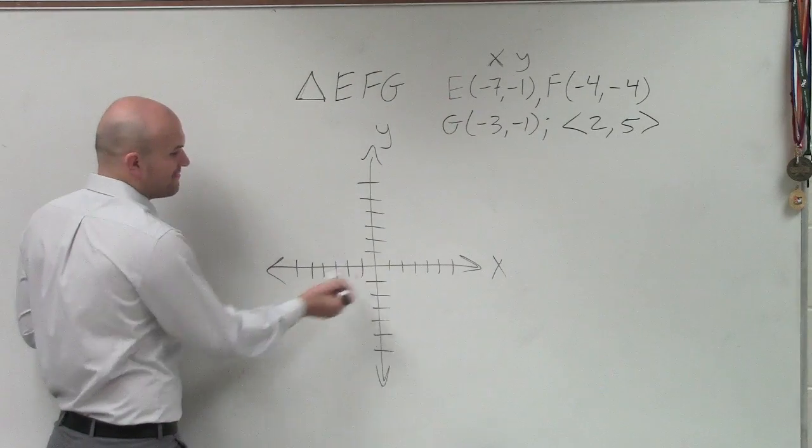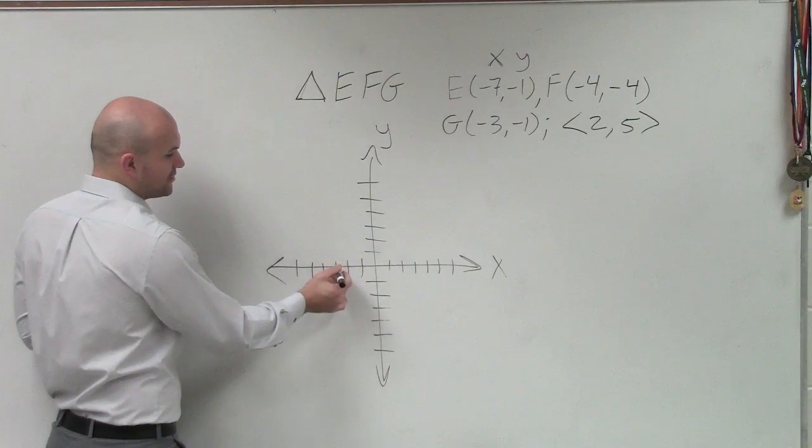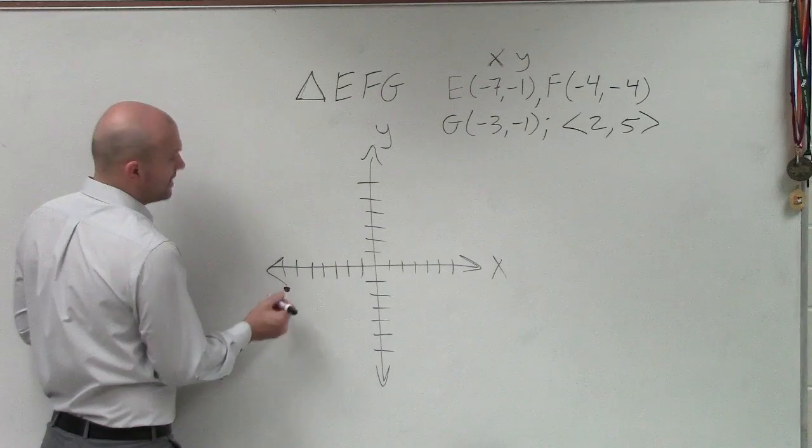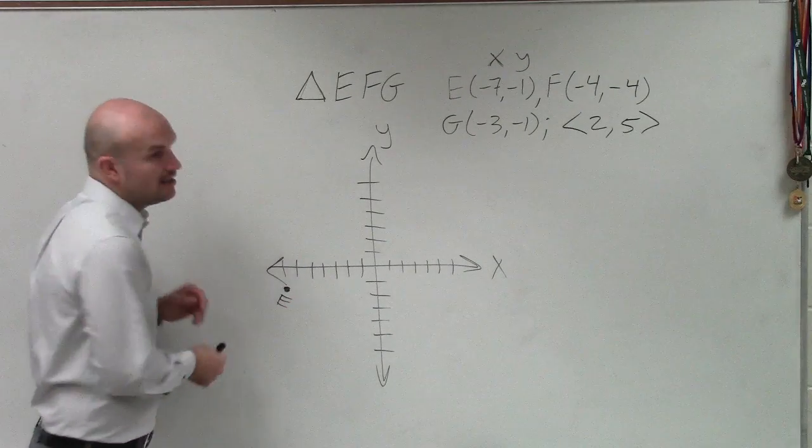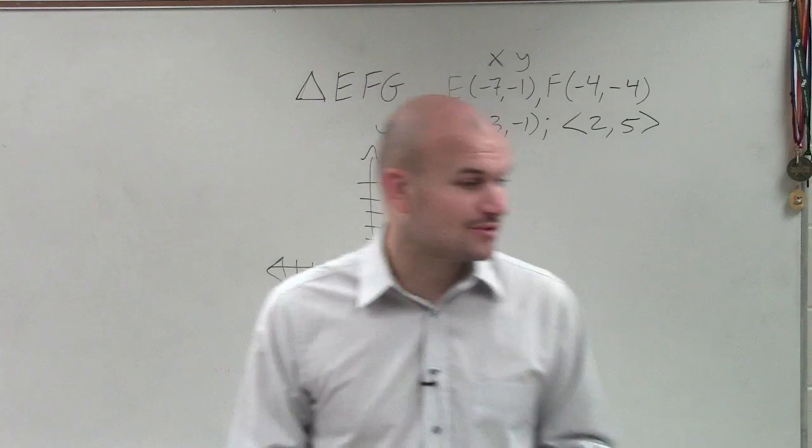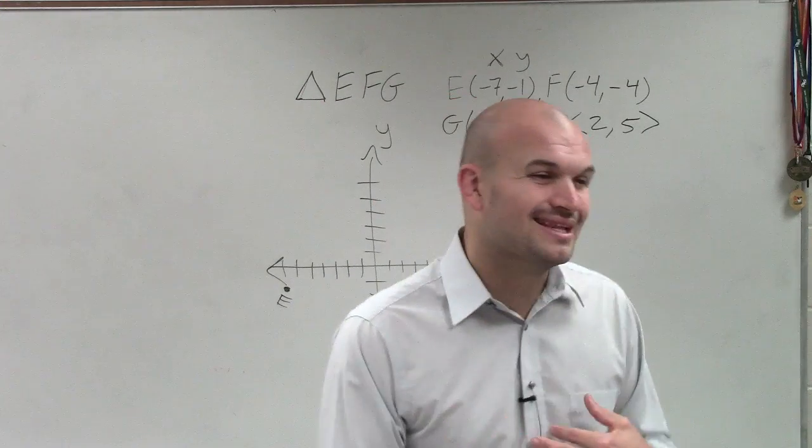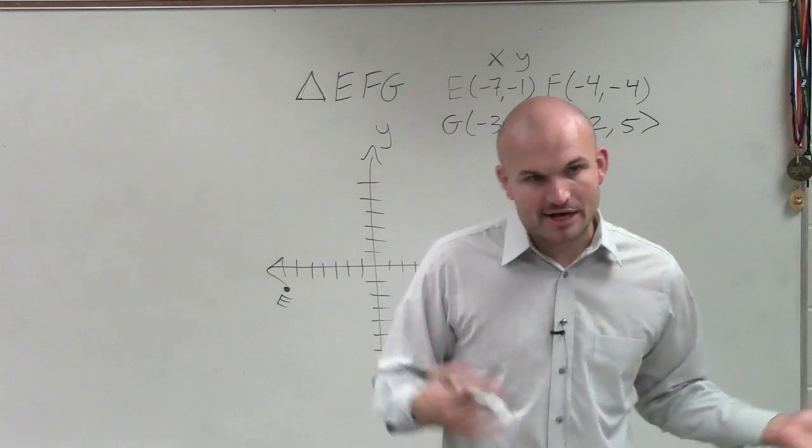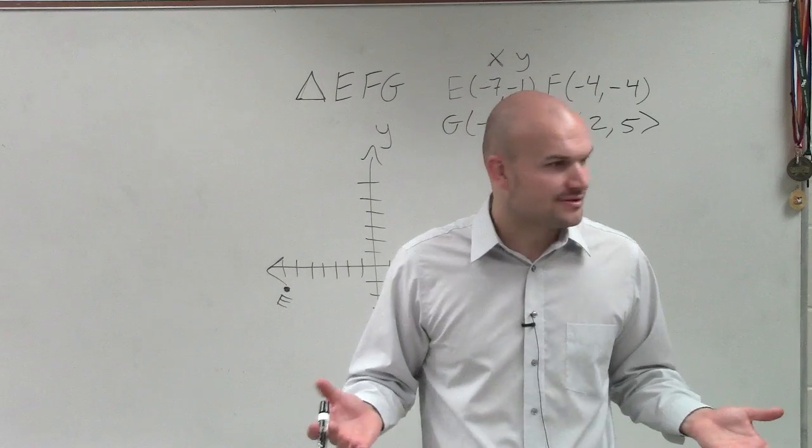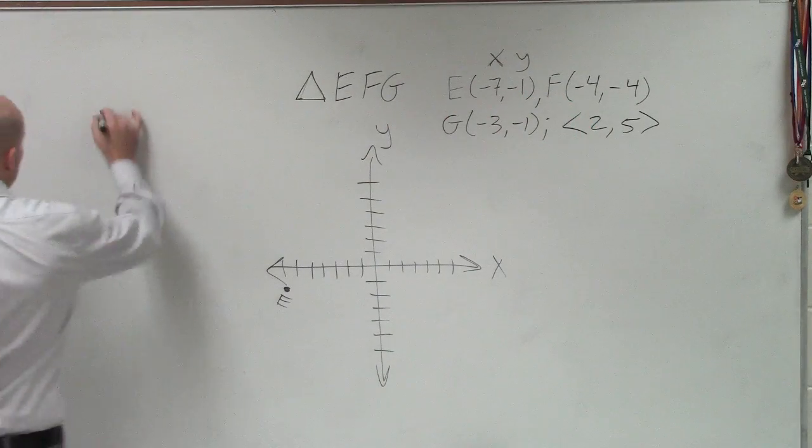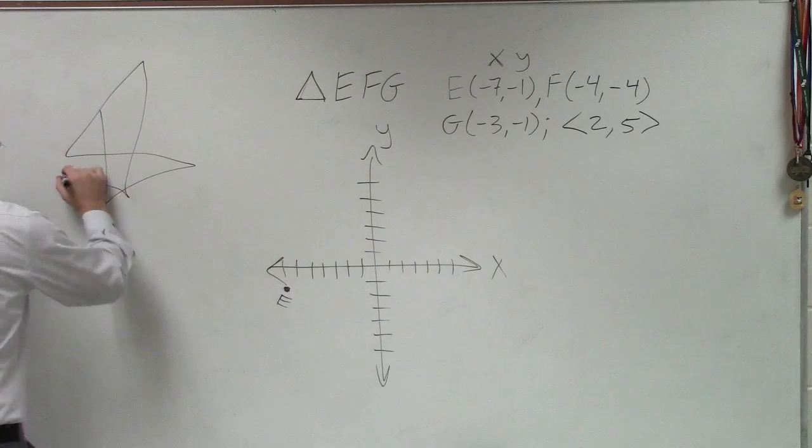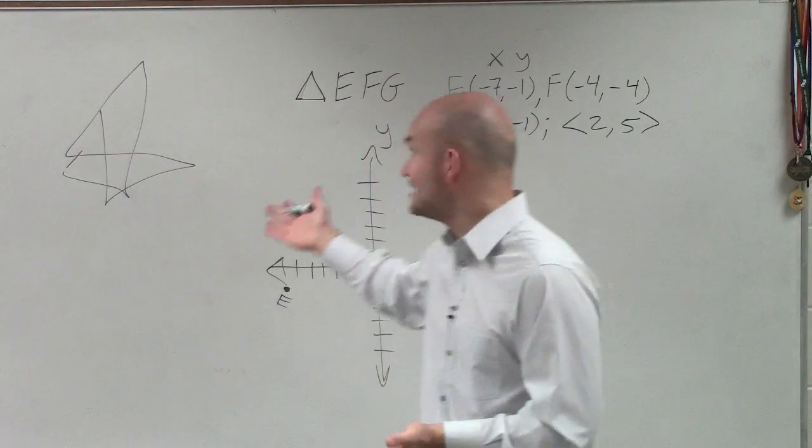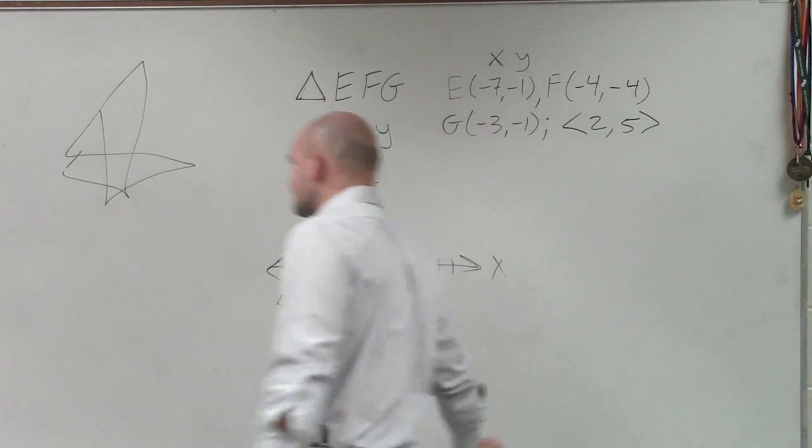So first point is negative 7, 1. 1, 2, 3, 4, 5, 6, 7. So negative 7, negative 1. So that point's roughly going to be right there, and that is point E. What's also nice about doing this, is if you guys have a polygon with many, many, many points, if you don't label them, then you're going to start forgetting what you graphed, right? I can't even tell you how many quadrilaterals I've seen that look like this, because students forgot to label them and then they just started connecting them all over, and they doubled them up. Yeah, I know, that's right. It's not even a quadrilateral, right? Or a polygon.